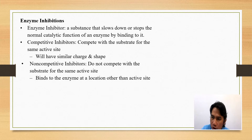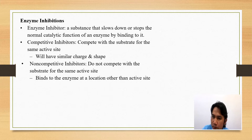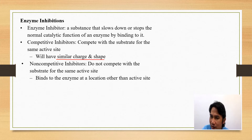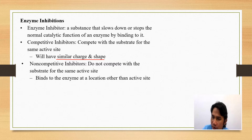In competitive inhibition, the inhibitor competes with the substrate for the active site. The reason why they compete with the substrate is because these inhibitors have similar charge and shape. Remember, in the lock and key model, the reason why the enzyme recognizes the substrate is because the substrate has a similar shape with the active site.